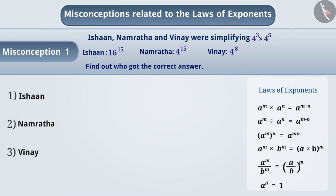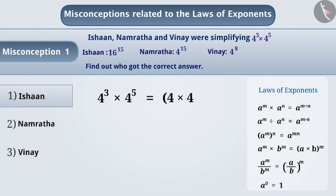Some children do not understand the laws of exponents properly. Due to this, they get the wrong answer. Ishan multiplied the bases to simplify 4 to the power of 3 multiplied by 4 to the power of 5, and also multiplied the exponents. Due to this, he got 16 to the power of 15, which is the wrong answer.